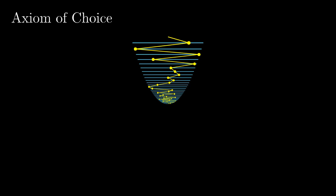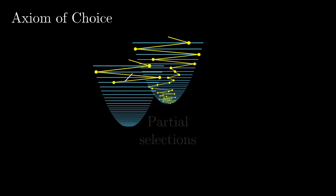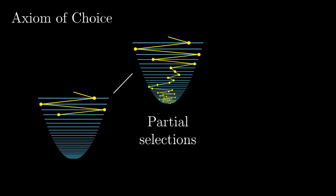We prove the axiom of choice using Zorn's lemma in the standard way. We consider the ordered set of all partial choices — sets which intersect every line in at most one point. A maximal element is what we are searching for: a partial choice we cannot extend, which therefore must intersect every line at exactly one point.